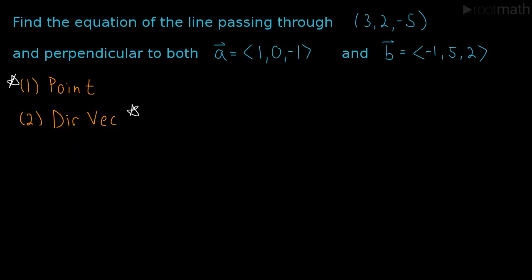In our case, they gave us a point that the line passes through. So for us, one is done. Point is (3, 2, -5). Part two, though, finding a direction vector is going to be a little bit harder.